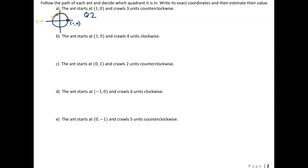To get our coordinates, I just need to say: what was your arc length in standard position? Since we were already in standard position and just crawled three units in the standard direction, to get our x-coordinate we take cosine of 3, and to get our y-coordinate we take sine of 3. Those are exact coordinates — there's nothing wrong with that.